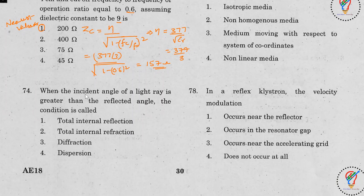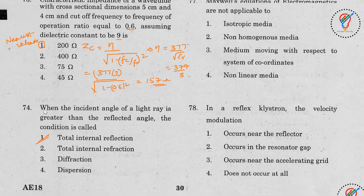Question 74: When the incident angle of a light ray is greater than the critical angle, the condition is called total internal reflection. Answer is option A.